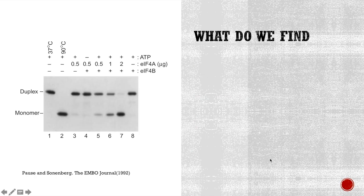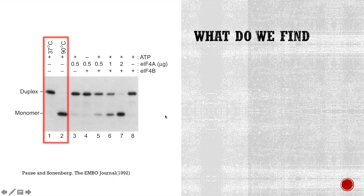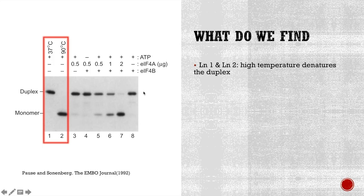So, what do we find from these experiments? This is the result from the experiments. Let's first look at lane 1 and lane 2. Lane 1 has substrates only under 37 degrees Celsius, and lane 2 has substrates only under 90 degrees Celsius. We could see that the high temperature denatures the partially double-stranded duplex and forms two monomers of the same length. That is why there is only one band here and one band here. These two bands also serve as a reference as where the duplex and monomers located on the gel, which can be useful for later result analysis.